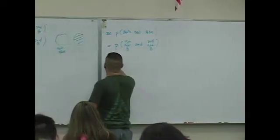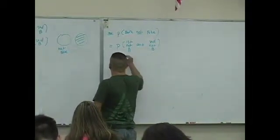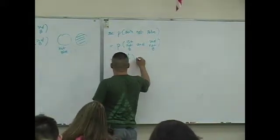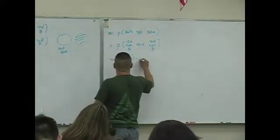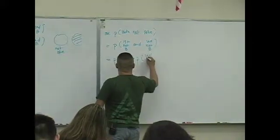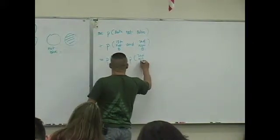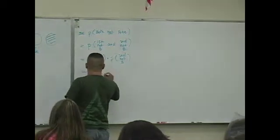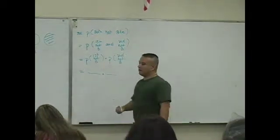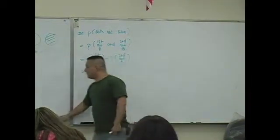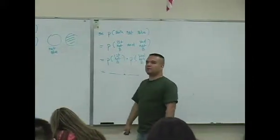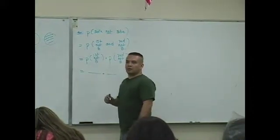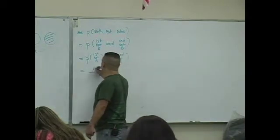How many are you selecting? Two. So what does that mean? You're using the multiplication rule. So you're reaching into the bag. What's the probability that that first marble is not blue? 10 out of 12.